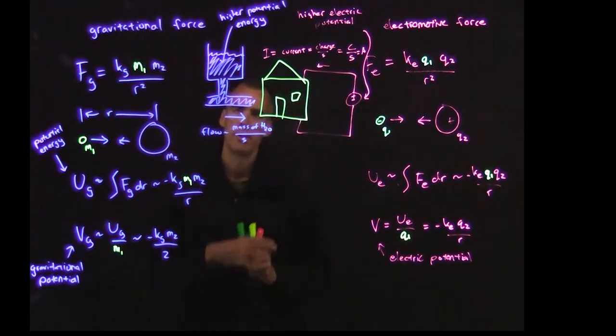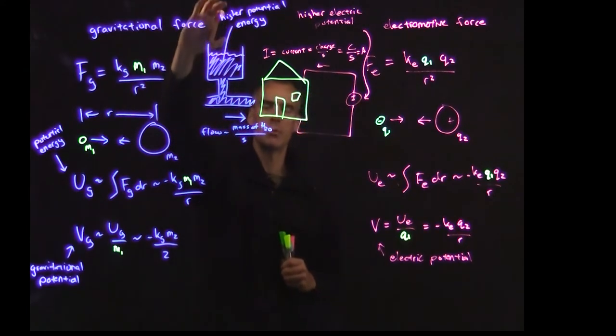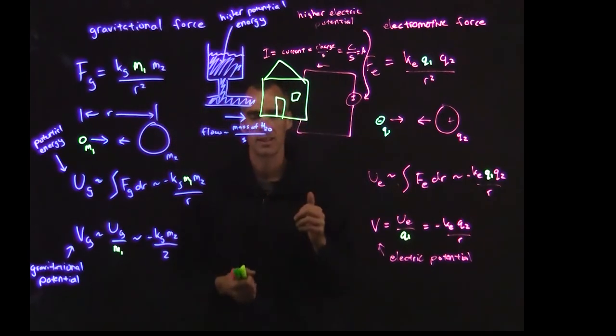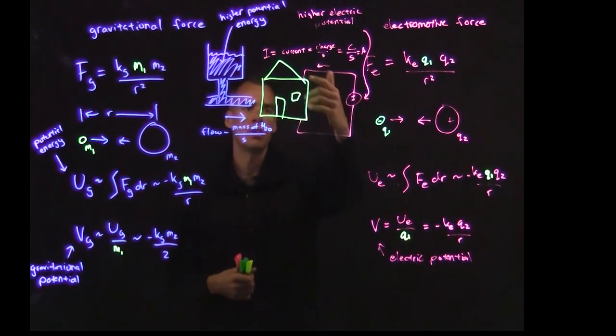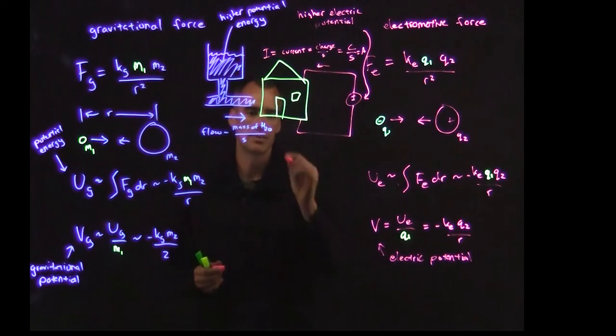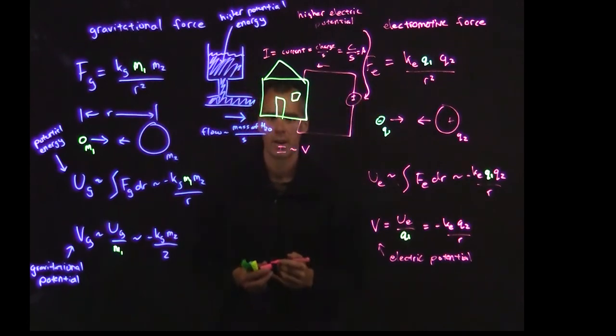So as you can imagine here, if you've got this water tank really high, it's going to put more pressure on that water. When you turn that faucet on, it's going to come out faster. And that's similar with our current here. If you got a higher electric potential here, it's going to push that current harder and more current is going to go through. So we've got this general relationship where the current is going to be proportional to that voltage that we have on our source.